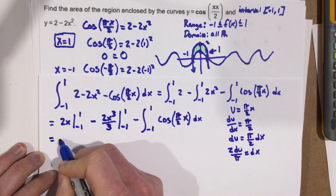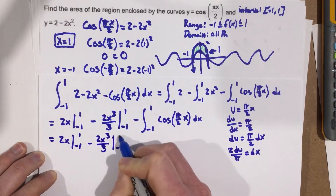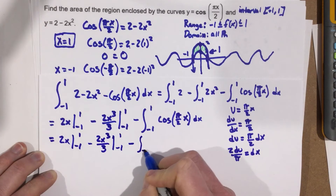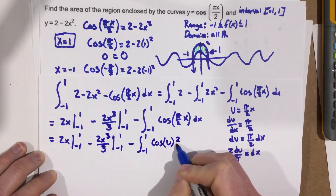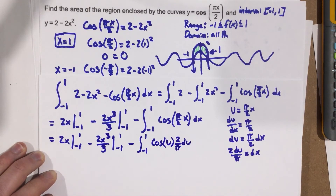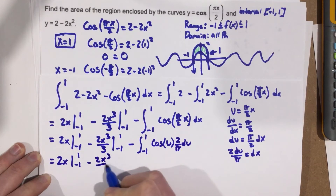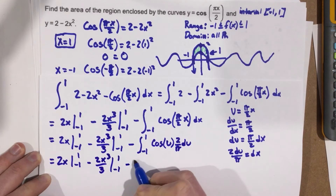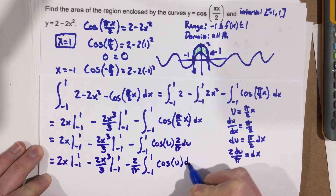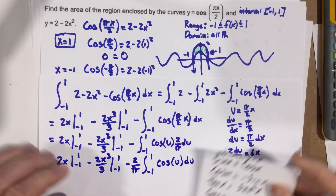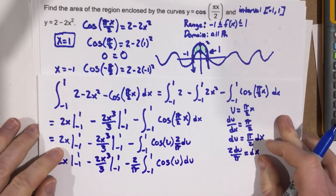Plugging the substitution in, we get 2x evaluated from negative 1 to 1, minus 2x cubed over 3 from negative 1 to 1, minus 2 over pi times the integral from negative 1 to 1 of cosine u du. Since the anti-derivative of cosine is sine, we get minus 2 over pi times sine of pi over 2 times x, evaluated from negative 1 to 1.